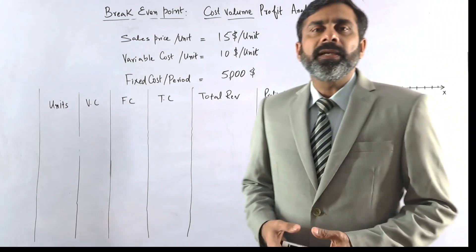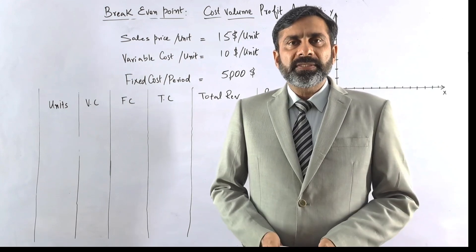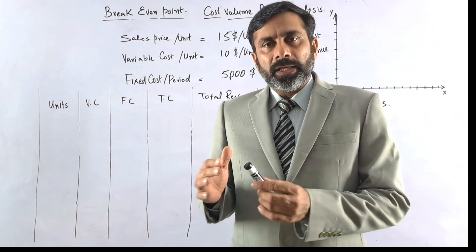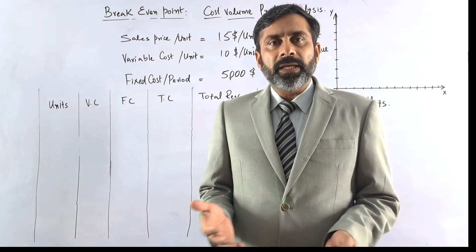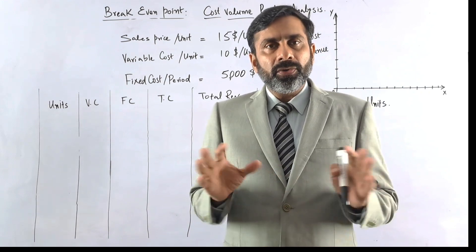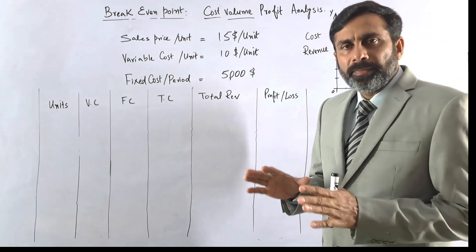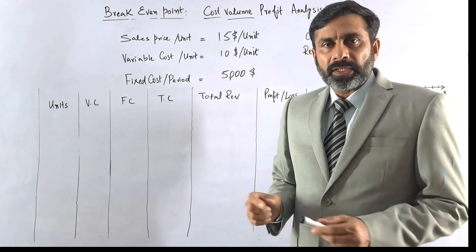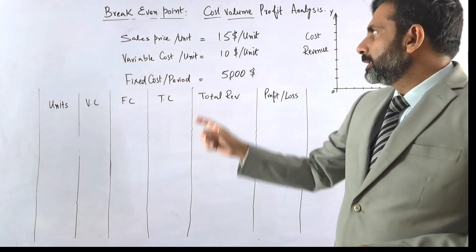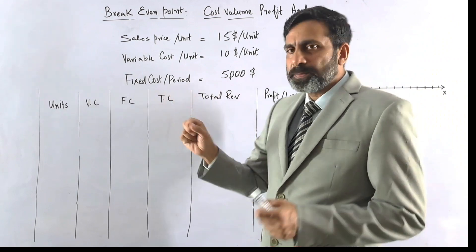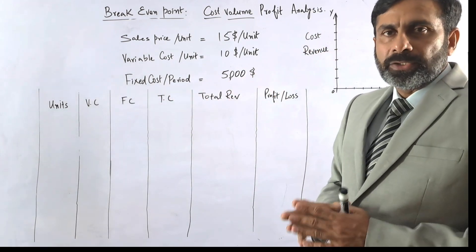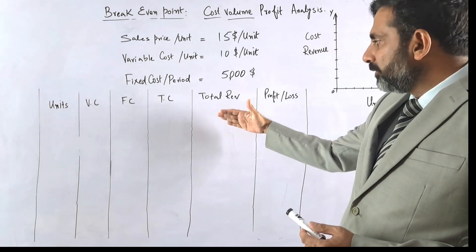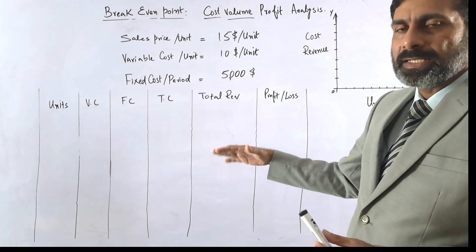We were discussing CVP analysis and the breakeven point in the previous lectures. We will continue and discuss the graphical presentation and the tabular method — how the breakeven point is calculated through a table and graphically. The basic information we have: a sale price of $15 per unit, a variable cost of $10, and a fixed cost of $5,000 for the period.